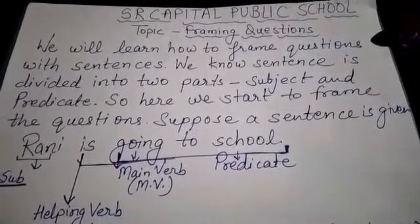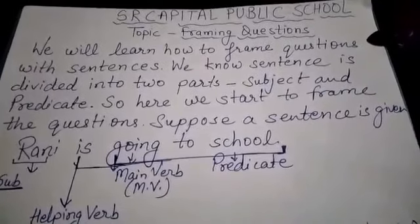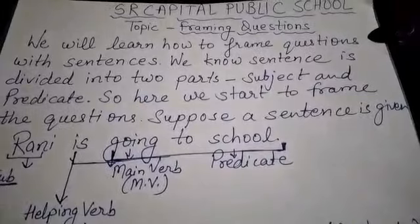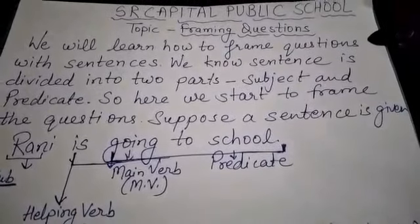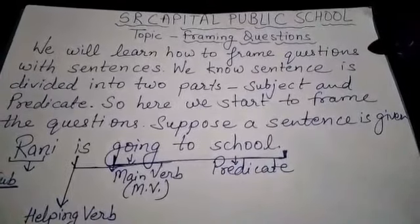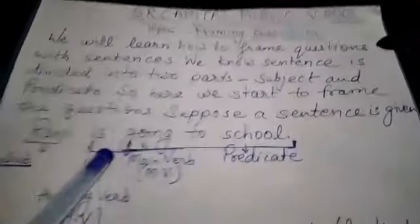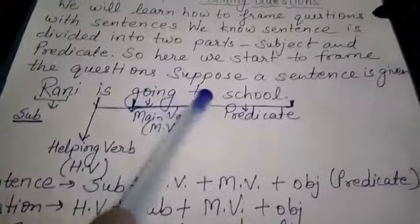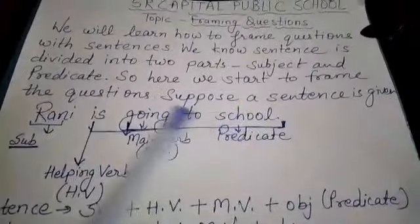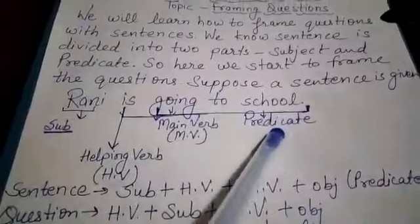We know a sentence is divided into two parts: subject and predicate. Here we start to frame the questions. Suppose a sentence is given: 'Rani is going to school.' This sentence is divided into two parts — subject and predicate.